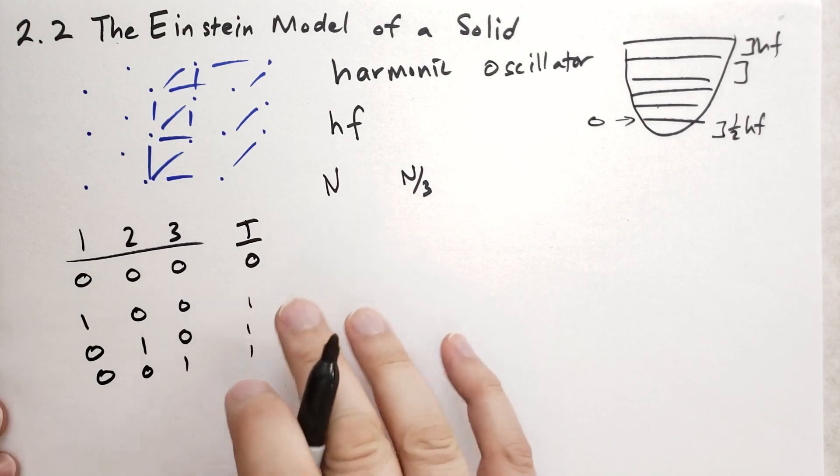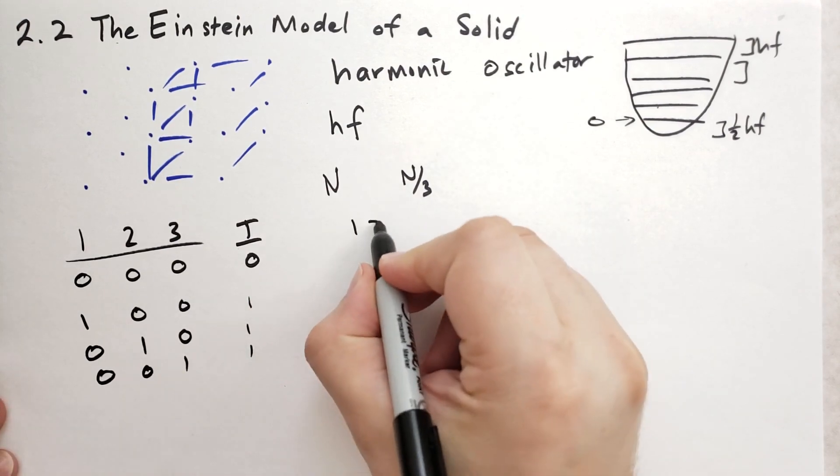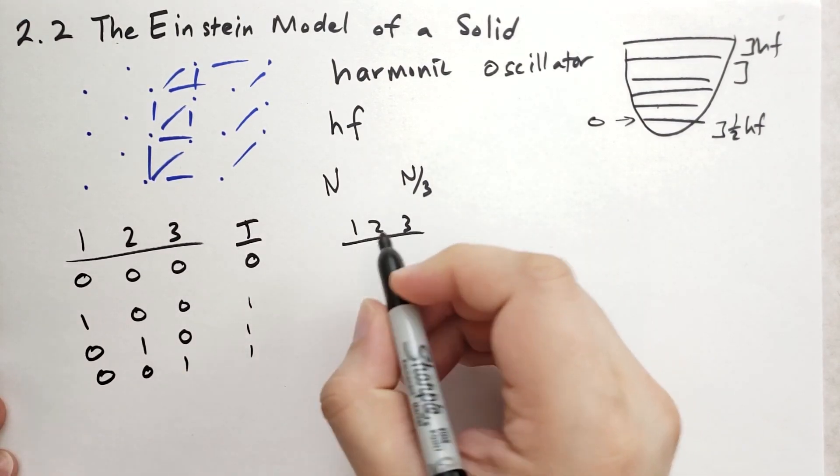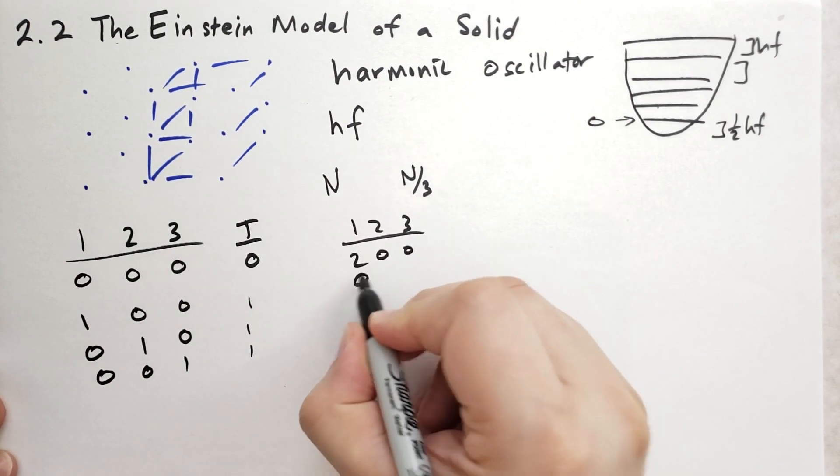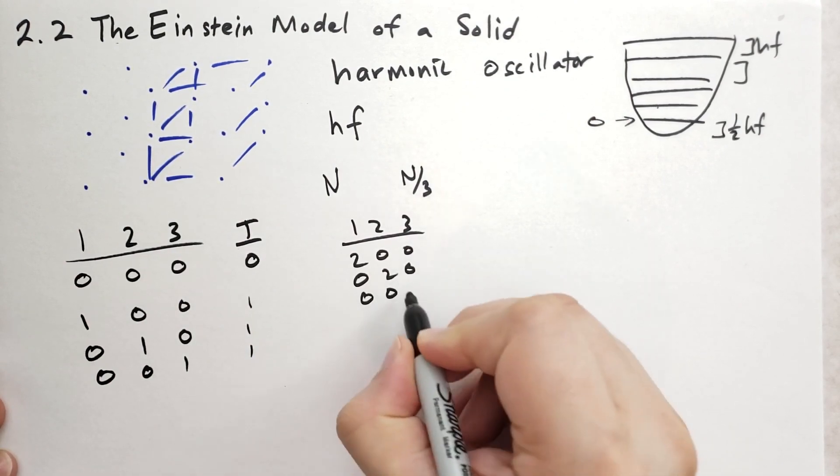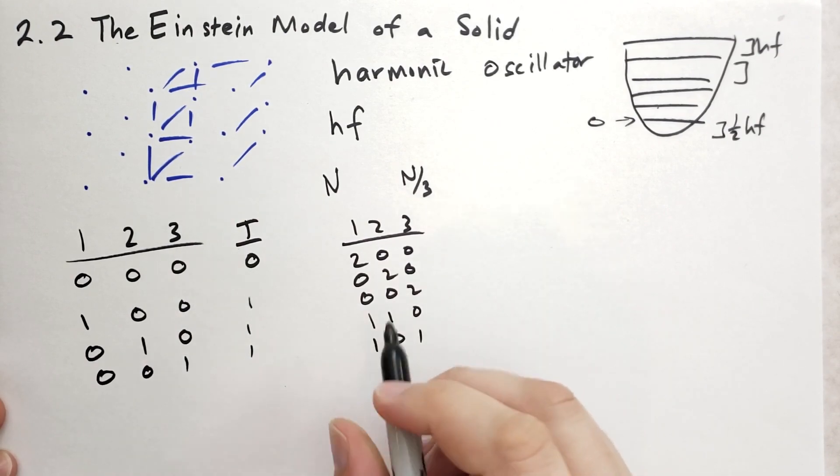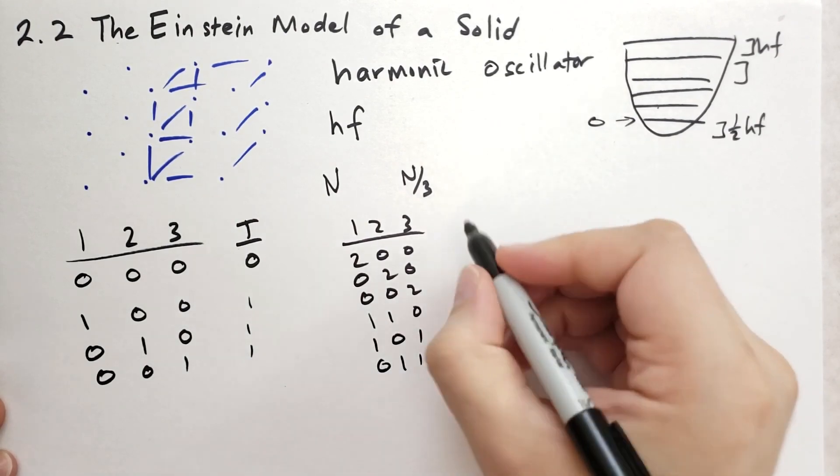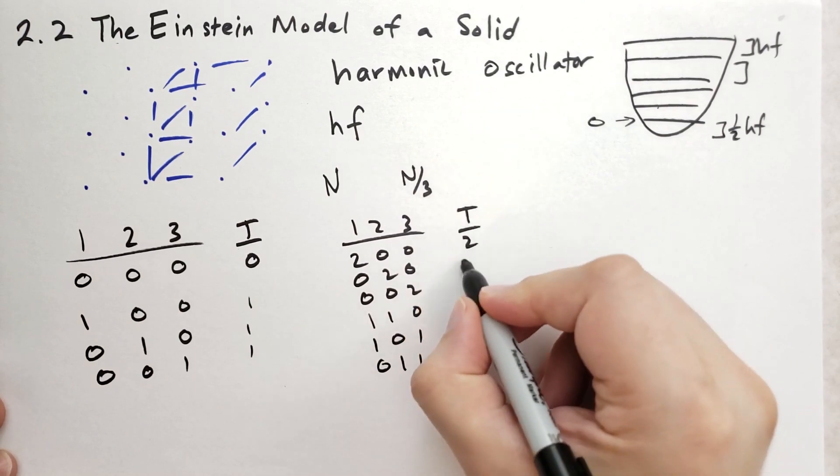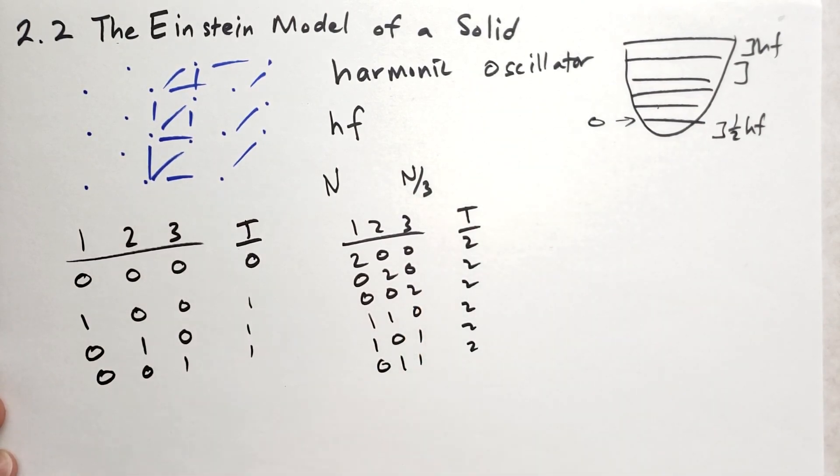Then for a total energy of two, there's quite a few different possibilities. We can have two, zero, zero; zero, two, zero; zero, zero, two. And then we can have one, one, zero; one, zero, one; and then zero, one, one. So there's a total energy here. Each of these have a total energy of two.